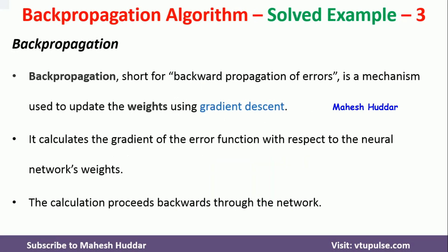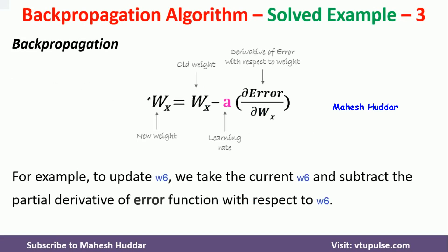In the back propagation algorithm, we propagate the errors backward and use the gradient descent weight update equation to update the weights. The equation is: Wx_new = Wx_old minus A multiplied by the derivative of error with respect to Wx. Where Wx is the old weight, if you subtract the learning rate multiplied by the derivative term, you get the new weight. For example, to update W6: new W6 equals old W6 minus learning rate multiplied by the derivative of error with respect to W6. Here A is a constant learning rate and Wx is the old weight.